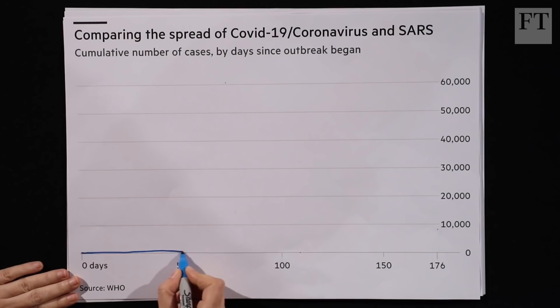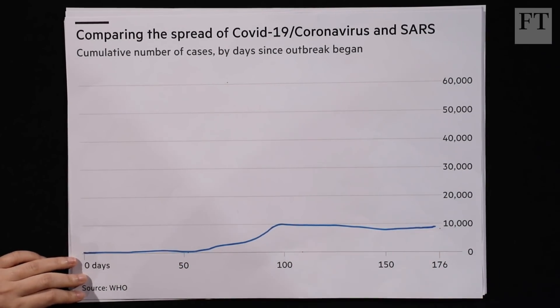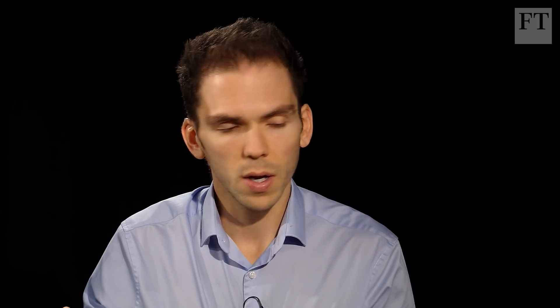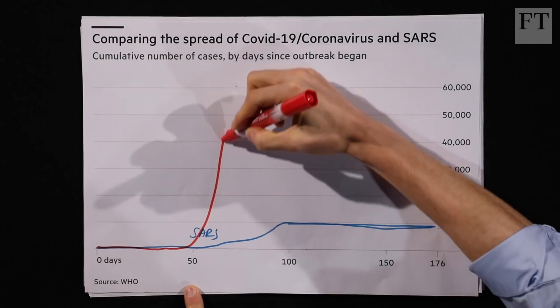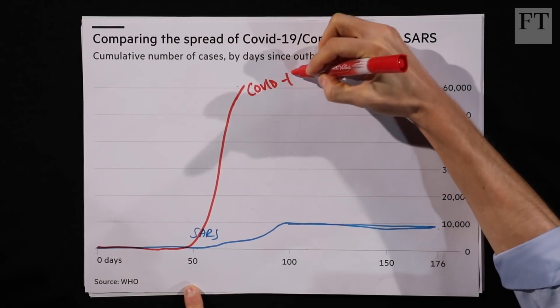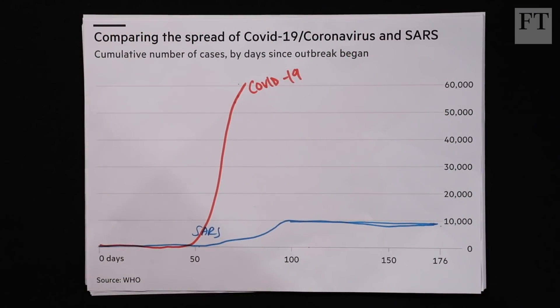Let's look at the number of cases starting from day one of the epidemic, when China first reported it to the World Health Organization, compared to the last famous epidemic, SARS. The number of SARS cases stayed fairly low and stabilised at around 10,000 after about 176 days. With COVID-19, we're well over 60,000 after just 60 to 70 days compared to under 10,000 after 176.